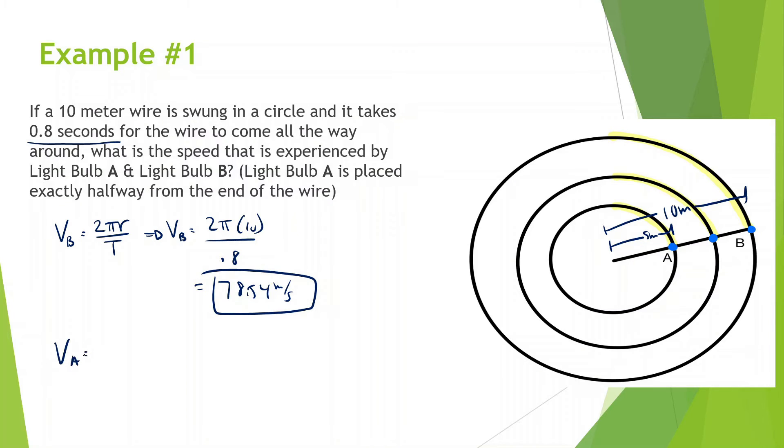Now, let's figure out light bulb A. We should know this one is going to be slower because it has a smaller radius. They go around at exactly the same time, but they don't cover as much distance. So, 2π, and the radius this time is going to be 5 meters because that's how far it is from where it's spinning. Time is the same, 0.8. Let's figure out what this is going to be: 2π(5) divided by 0.8. And we see that it's actually exactly half, 39.27 meters per second, because it's halfway from where light bulb B is.